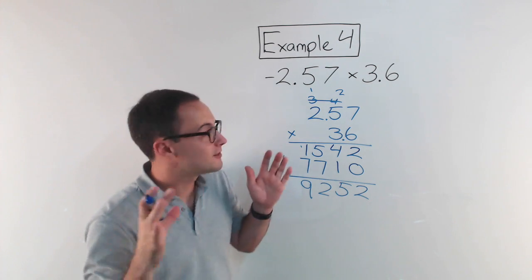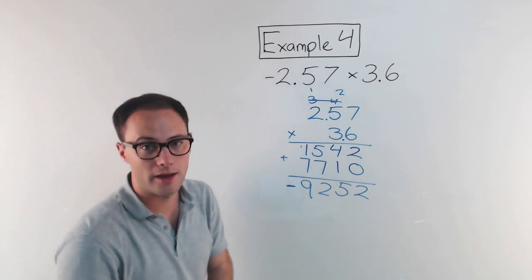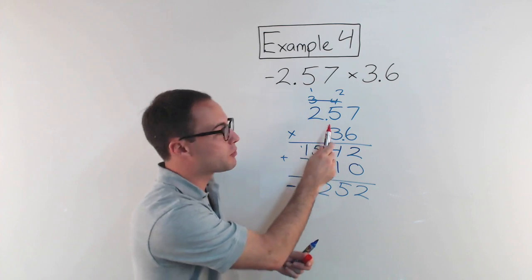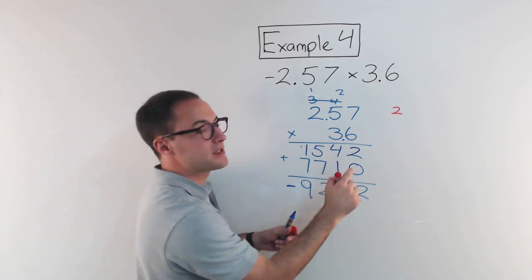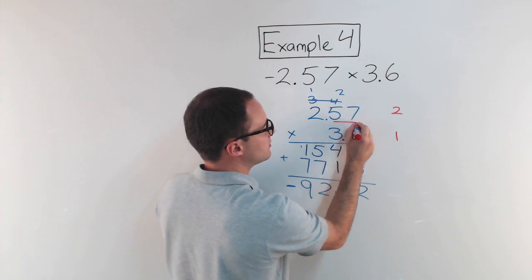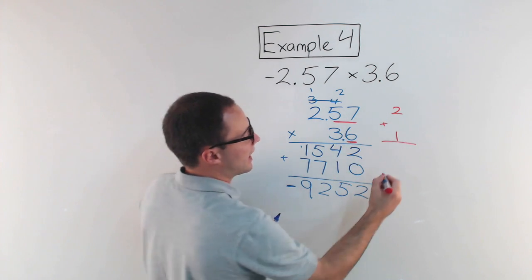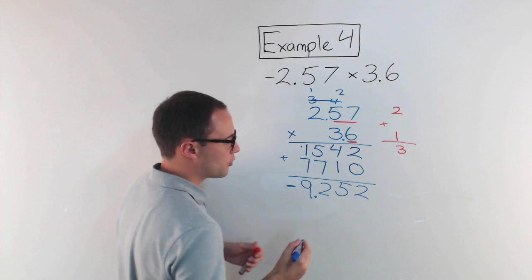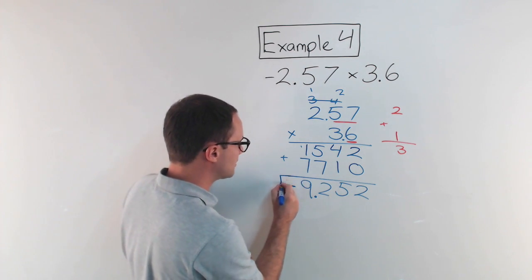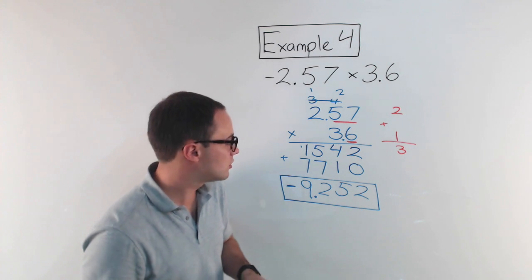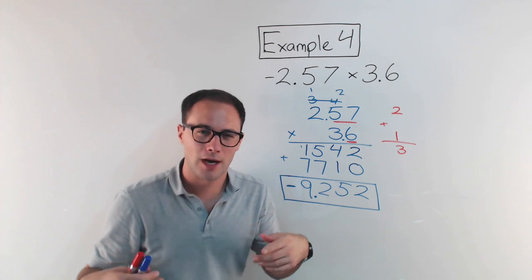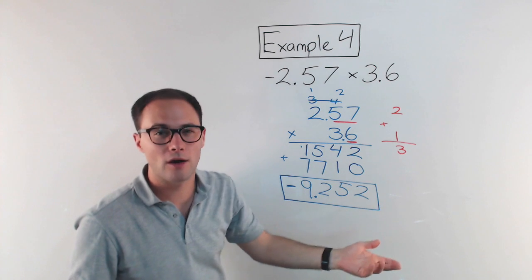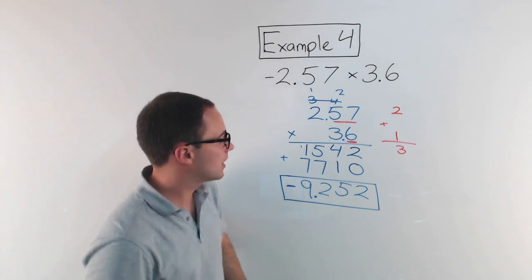Don't forget the answer is negative. Now for the last step: place the decimal. Two-point-five-seven has two decimal places, and three-point-six has one, so my product should have three decimal places. Going one, two, three from the right, the decimal goes right there. My final answer is negative nine-point-two-five-two. To estimate: rounding to negative three times four gives negative twelve — that's pretty close, so the answer makes sense.